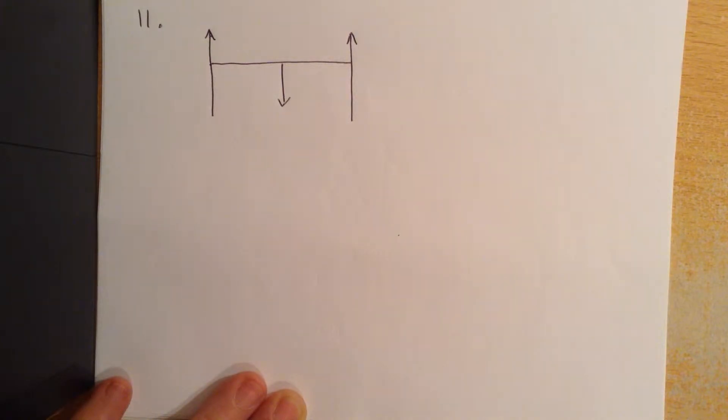Part A of the question says when the bridge crane supports a load of 380 kilonewtons at its centre, a force of 1600 kilonewtons is exerted on each pillar. Calculate the weight.